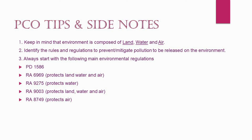Before we end this discussion, I would like to give you some PCO tips and side notes. Always remember that the environment is composed of land, water, and air. You can start identifying and analyzing what rules and regulations apply to prevent or mitigate pollution released into the environment. Always start with the following main environmental regulations: PD 1586; RA 6969, which protects land, water, and air; RA 9275, which protects water; RA 9003, which protects land, water, and air; and lastly, RA 8749, which specifically protects the air.